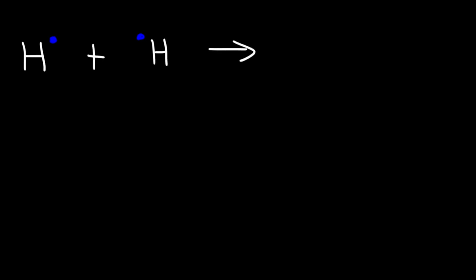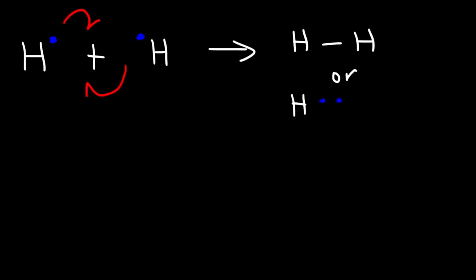Let's say we have two hydrogen atoms approaching each other. They will react and form a covalent bond, which is a bond where electrons are being shared. You can write the bond as a single bond or put two electrons between the hydrogen atoms. This concept makes sense if you think of electrons as particles.